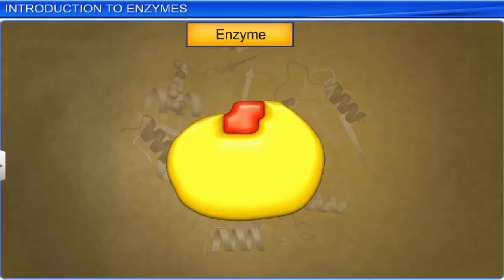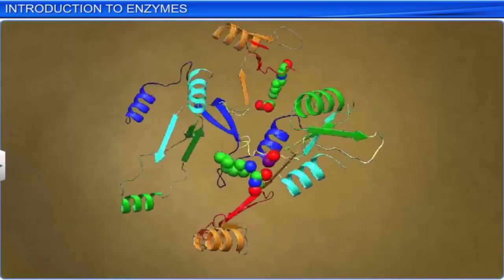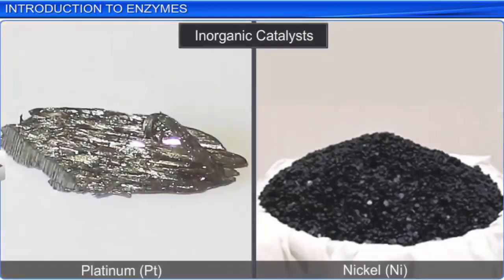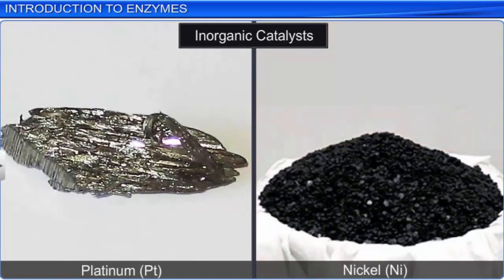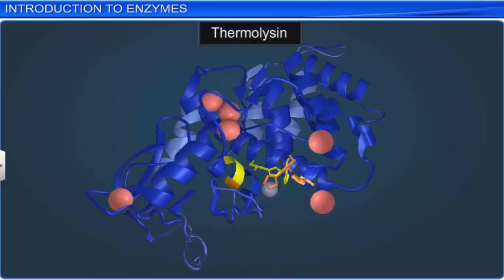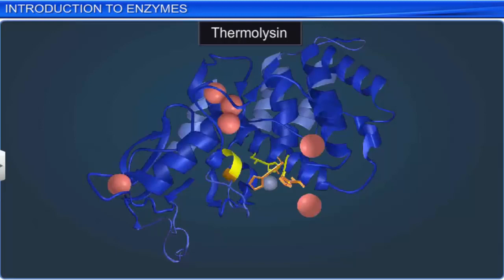While enzymes catalyze chemical reactions, they are very different from inorganic catalysts. Inorganic catalysts such as platinum and nickel work effectively at high temperatures and under high pressure, while enzymes are damaged at temperatures above 40 degrees centigrade. However, some enzymes such as thermolysin can be isolated from thermophilic organisms that live in high-temperature environments, like sulfur springs. These enzymes retain their catalytic power even at temperatures as high as 80 to 90 degrees centigrade.